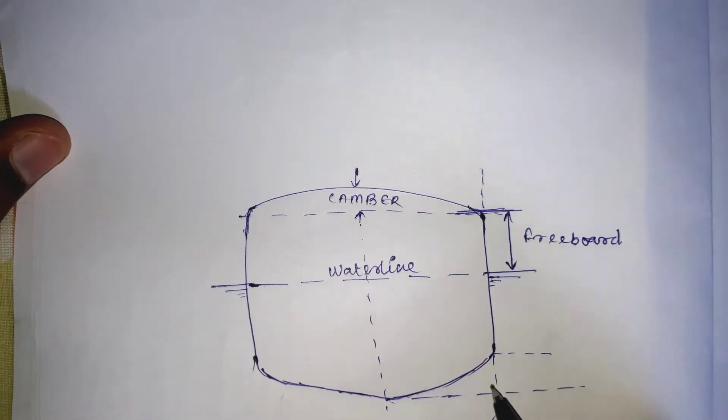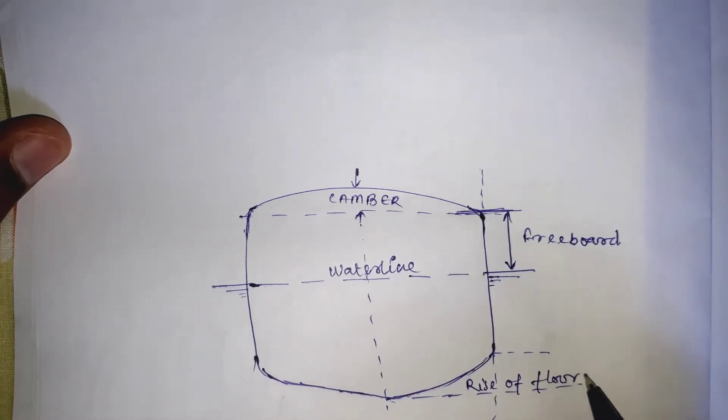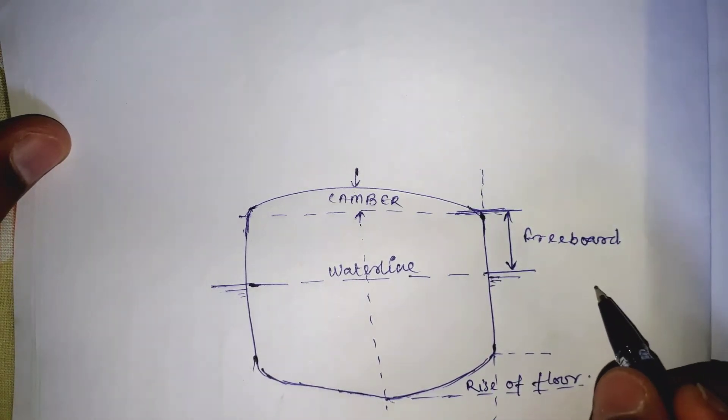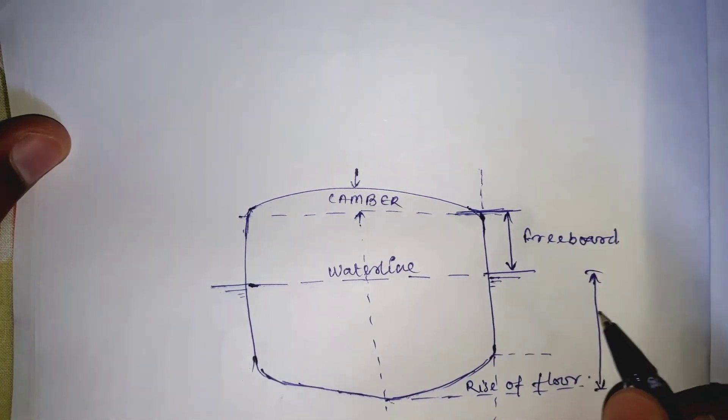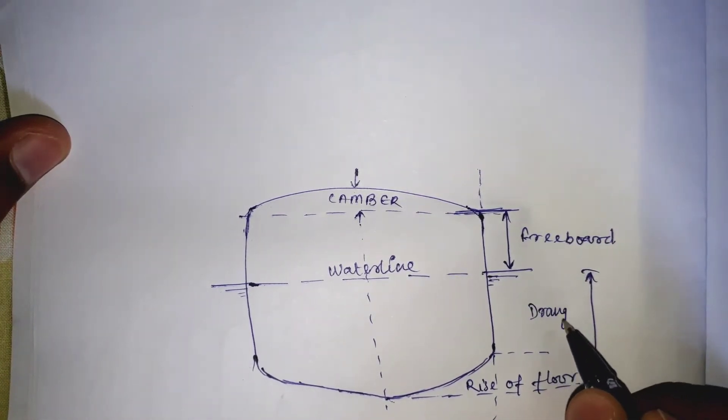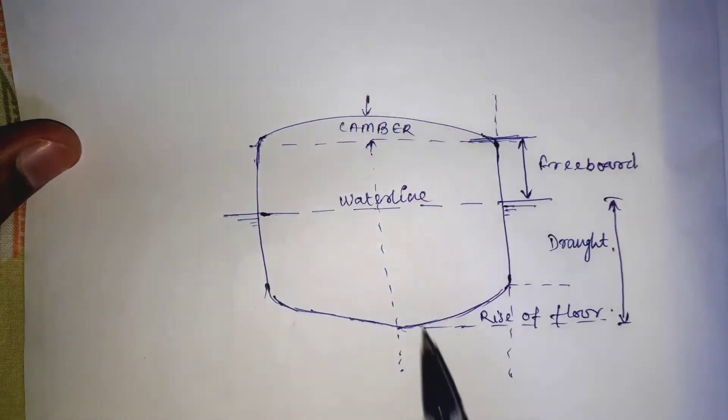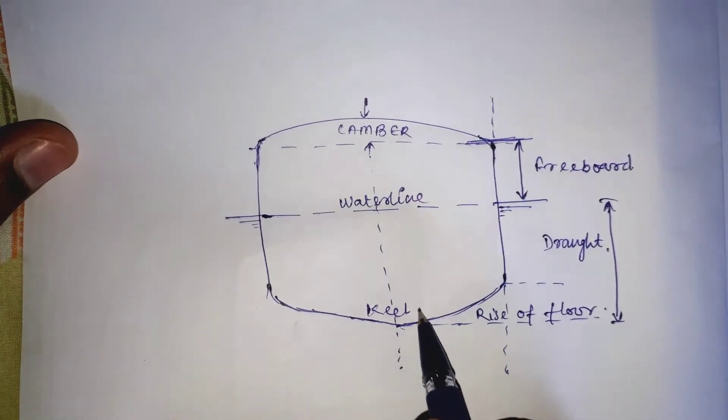Fourth is the rise of floor. Rise of the bottom shell plating in the transverse direction above the baseline from the keel towards the sides is known as rise of floor. This feature is rather obsolete and rarely found in modern ships. Draft is the vertical distance between the waterline and the bottom part of the hull.